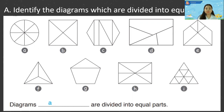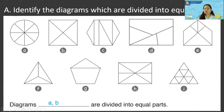Letter B — it is equal. Letter C — no, because there is one longer part, there is a triangle and a rectangle, so it is not equal. Letter D — no, there are smaller parts and bigger parts, so unequal. Letter E — no, because there are smaller parts.